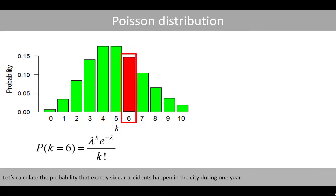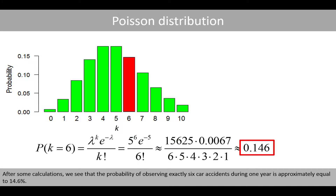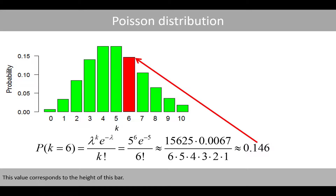Let's calculate the probability that exactly six car accidents happen in a city during one year. We change the value of k from 2 to 6. After some calculations, we see that the probability of observing exactly six car accidents during one year is approximately equal to 14.6%. This value corresponds to the height of this bar.